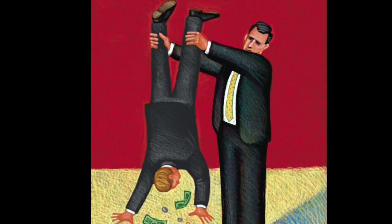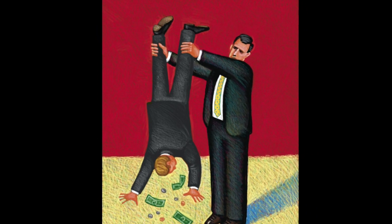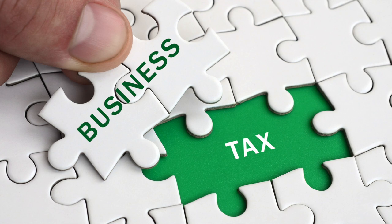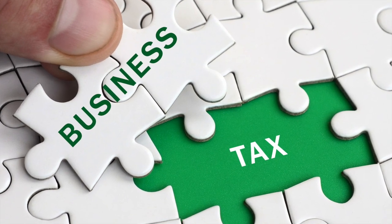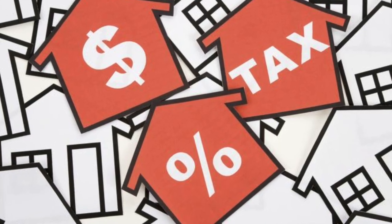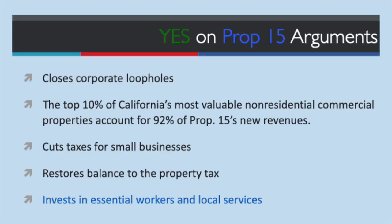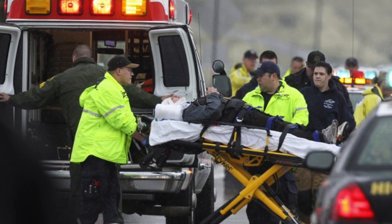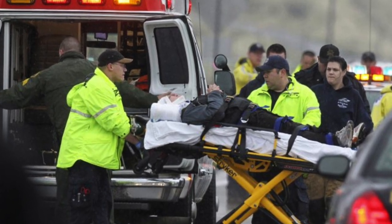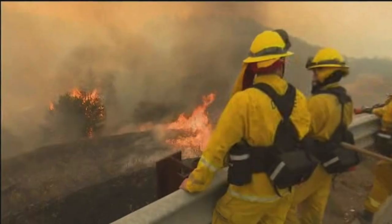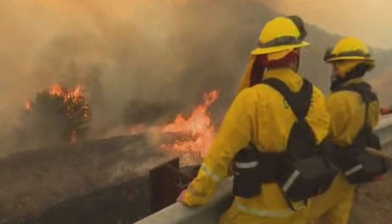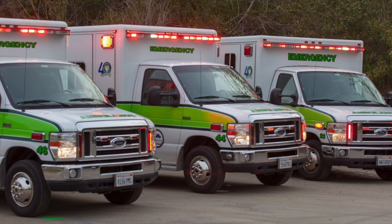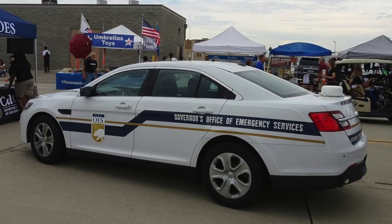Meanwhile, residents are paying more in fees, fines, and other taxes. Prop 15 keeps Prop 13's low 1% limit, so California's business property taxes will still be below most states. It gives local communities desperately needed resources so essential services and frontline workers can respond to current challenges and prepare for future crises, whether from a wildfire, pandemic, or earthquake.